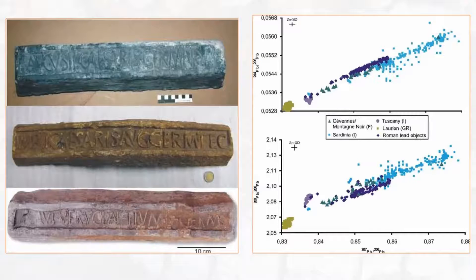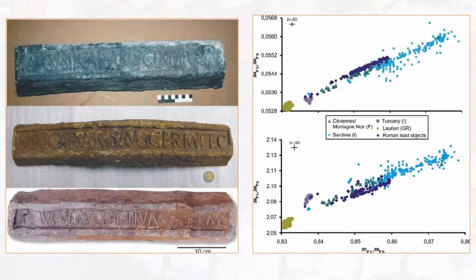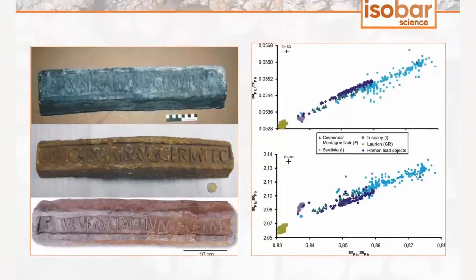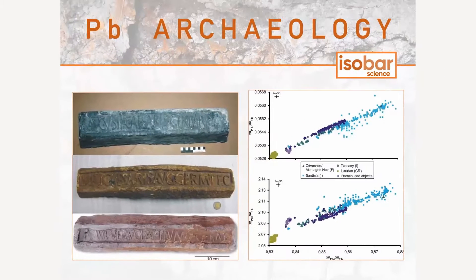As well as lead from ancient Rome itself. The plot on the right shows that lead artifacts from Sardinia, for example in light blue, have a very different lead isotope signature compared to Roman lead objects shown in dark purple — so there's a nice way to distinguish where they're from.